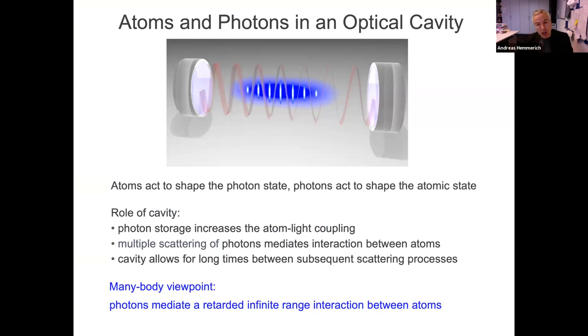Our system is composed of atoms and photons in an optical cavity where the atoms act to shape the photon state and the photons act back to shape the atomic state. And if you want the role of the cavity in a few words that can be specified by saying that photon storage increases the atom light coupling. There's multiple scattering of photons mediating interaction between the atoms. And in our specific system, the cavity allows for very long times between subsequent scattering processes, because the lifetime of the photons bouncing back and forward between the mirrors is extremely large in our system. So in a many body viewpoint in our systems, the interaction mediated by the photons is not only infinite range, but it is retarded infinite range due to the long lifetime of the photons in the cavity.